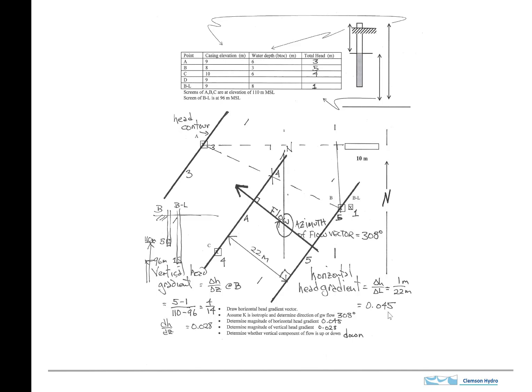Okay, now we also are interested in calculating the vertical head gradient. And this example shows how to do that. What I'm doing here is I've got this point B, and then this other well here, BL. So this is BL, stands for lower aquifer.